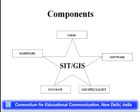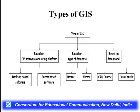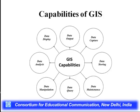Database, users, and GIS specialists are very important. Types of GIS include operating system-based GIS software, desktop-based software, and server-based software. Based on type of database, we have raster (grid-based) and vector (object-based) databases. Capabilities of GIS include data output, data capture, storing, maintenance, query, manipulation, analysis, and finally data displaying.